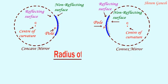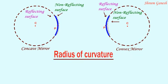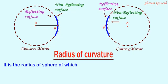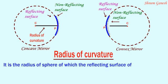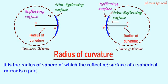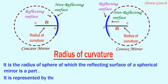Radius of curvature. It is the radius of the sphere of which the reflecting surface of a spherical mirror is a part. It is represented by the letter R.